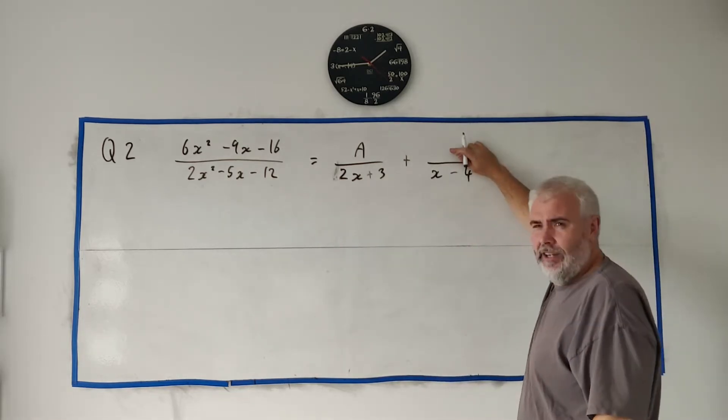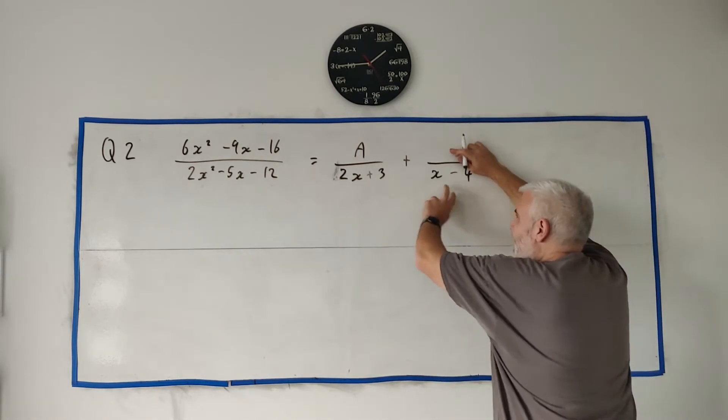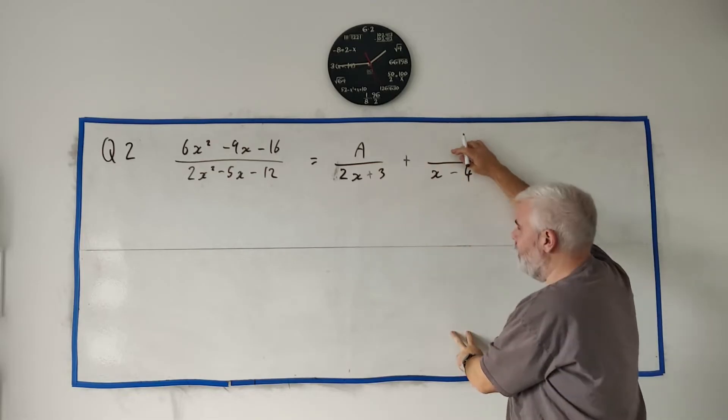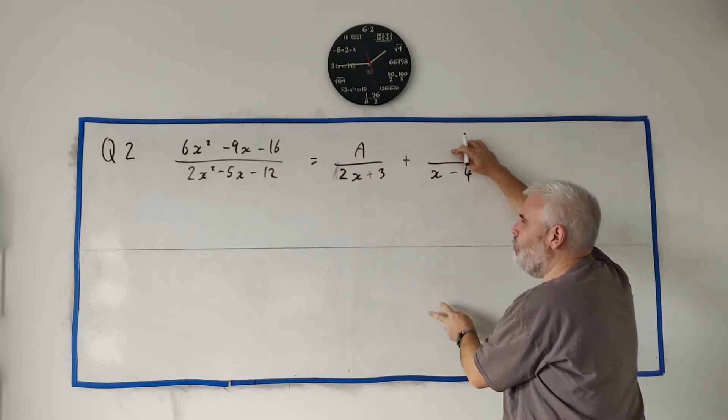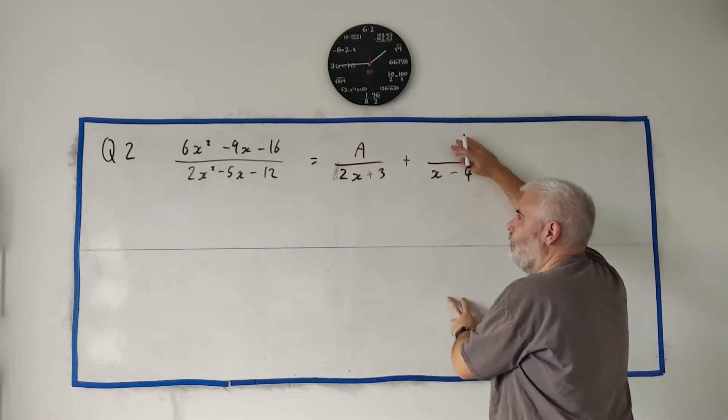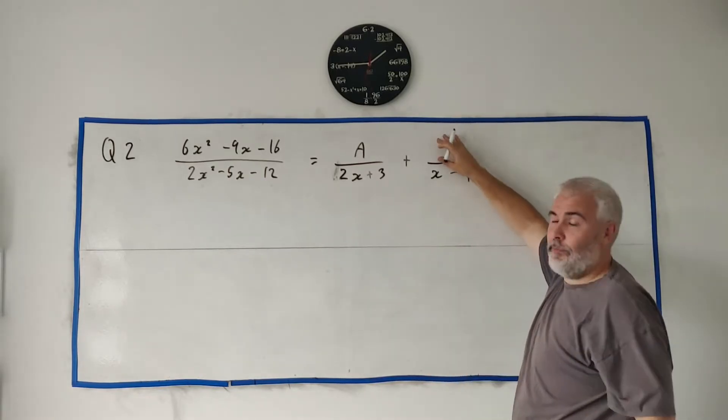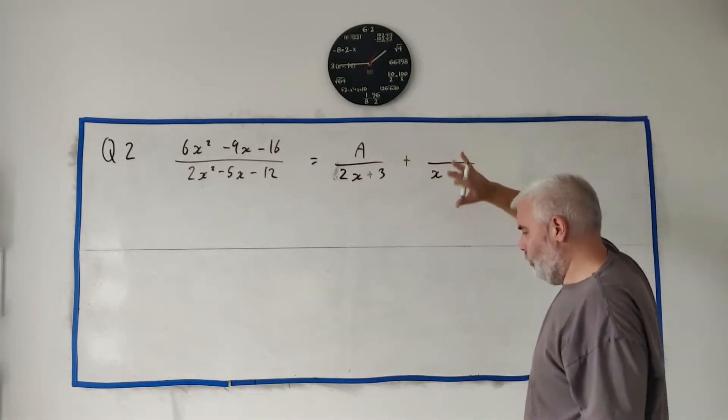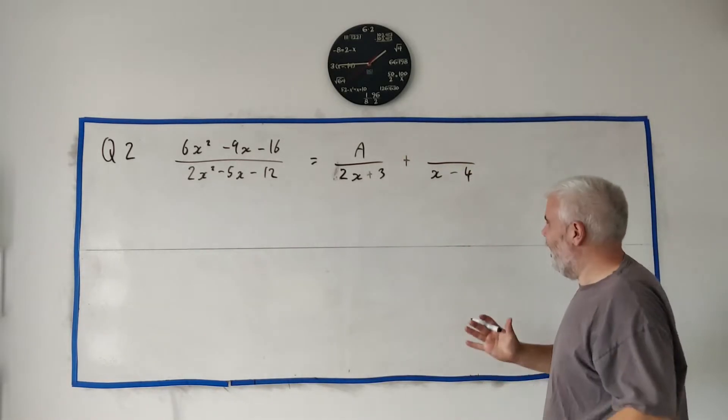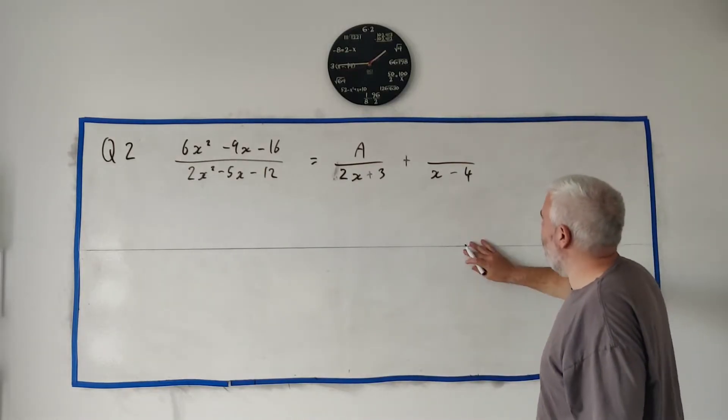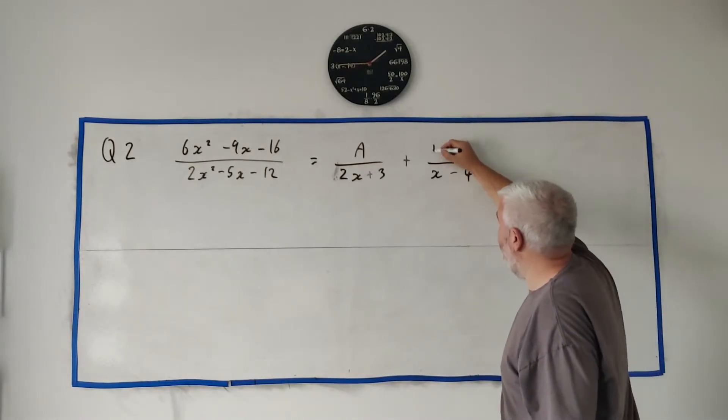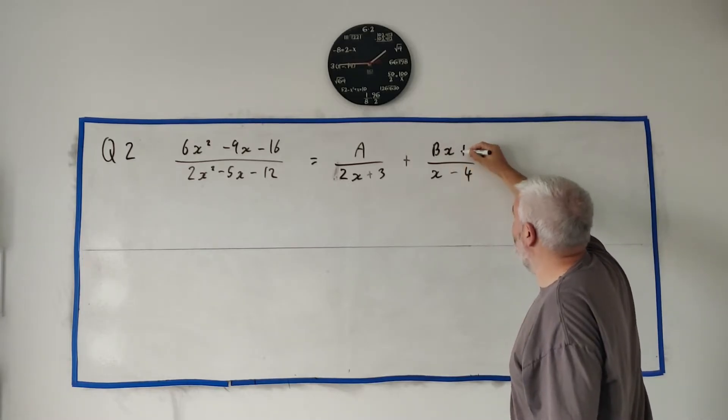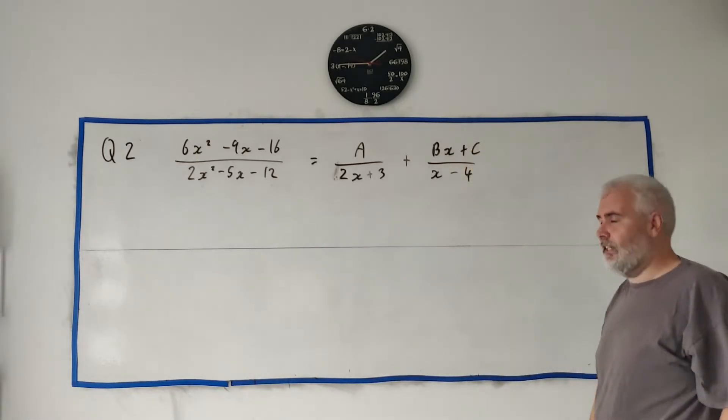But if I just had B here, if you tried to add these back together, cross multiply, you'd find it didn't work because you'd find something, you'd find no X squared. There'd be no X squared when you do this side. So A or B would have to have an X in it. And that's very messy. So what we really want to do is just put an X here. So I'll just have BX plus C. I'll just leave it like that.